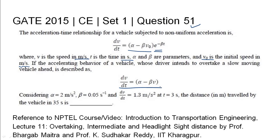Considering alpha equals 2 meter per second square, beta equals 0.05 second inverse, and dv by dt is equal to 1.3 meter per second square at t equals 3 seconds, the distance needs to be found which is traveled by the vehicle in 35 seconds in units of meter. The relevant NPTEL reference has been listed.